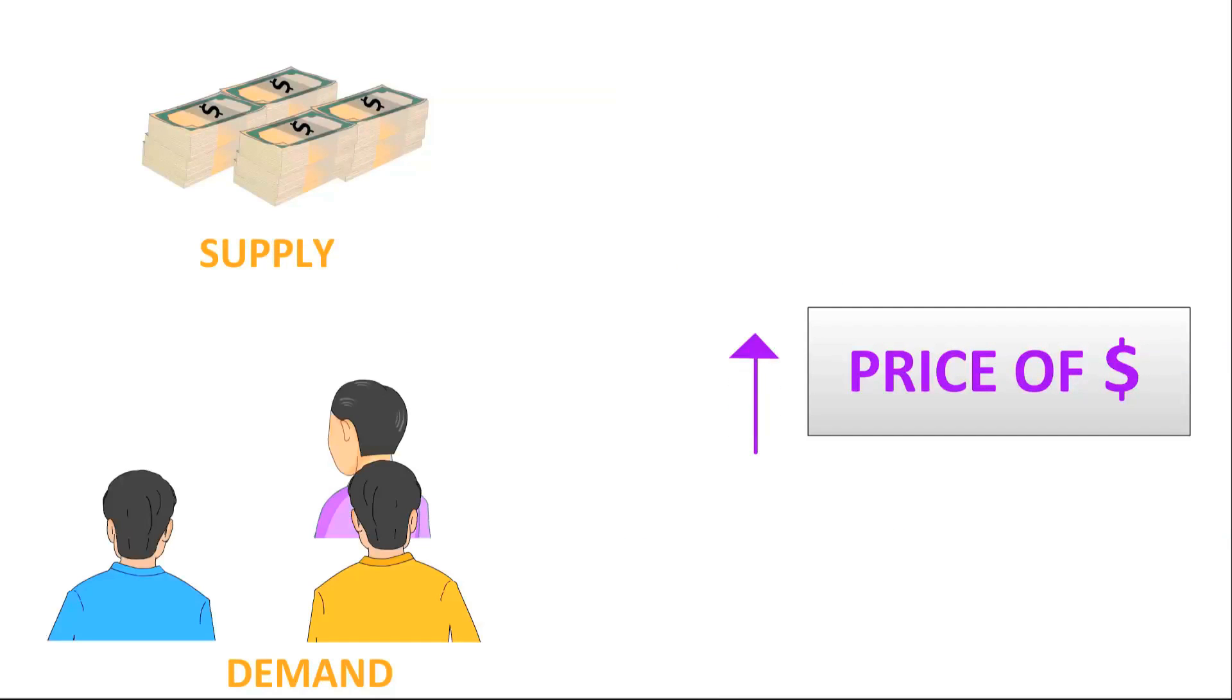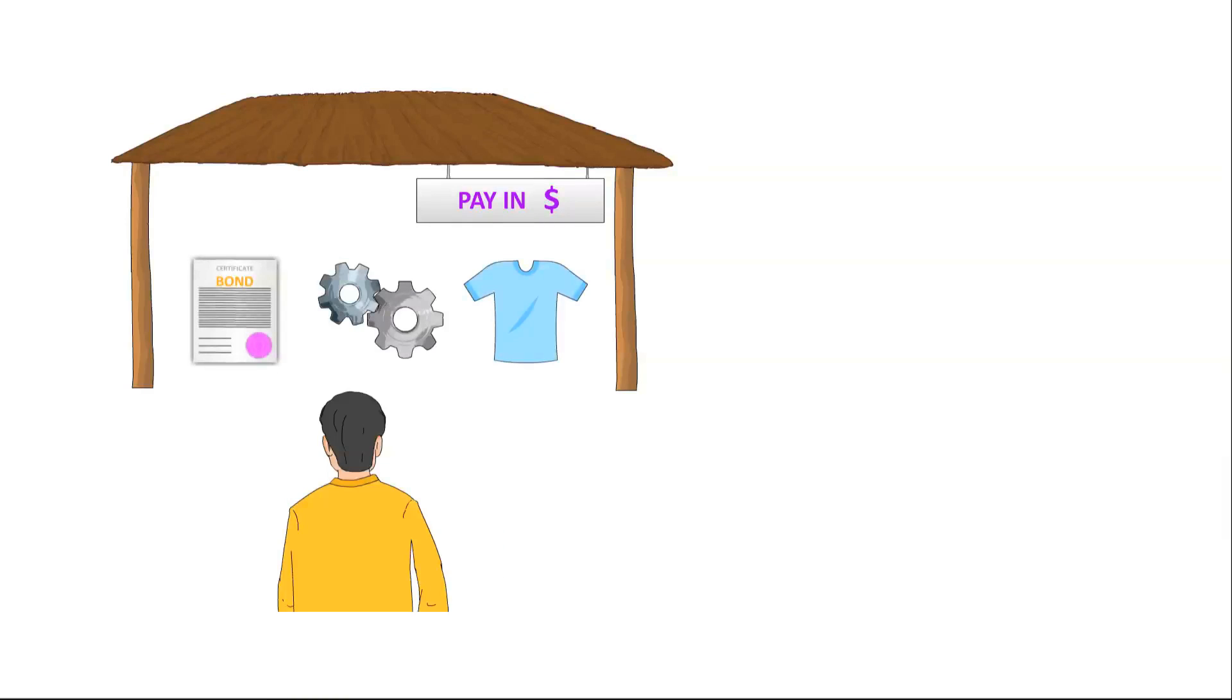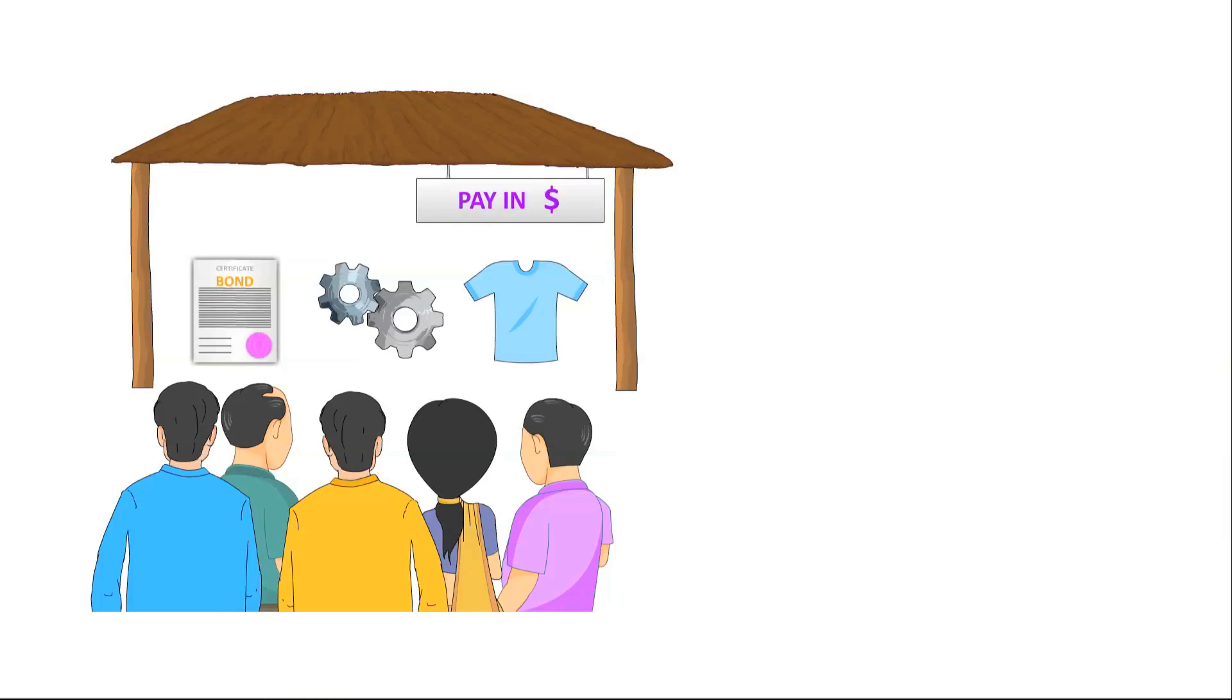Mudra finds that the price of a currency is closely tied to demand and supply. When the demand increases for goods, services and investments like machinery, garments or bonds that are paid for in US dollars, the price of the US dollar goes up.